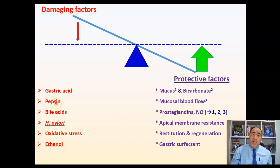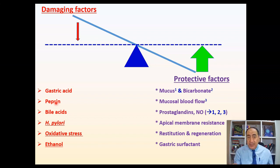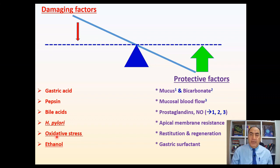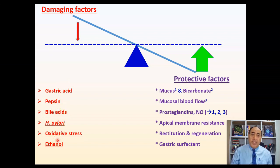Since HCL is inhibited, pepsin — which is produced as pepsinogen from chief cells and converted into active pepsin by HCL — is also inactive. These two damaging factors are not present. For bile acids, nothing needs to be done. If the patient has H. pylori, treat it — we'll discuss that in the next video. For oxidative stress, use antioxidants like vitamin E. Ethanol and smoking also damage mucosal barriers and enhance ulcer development, so ask the patient to stop smoking and drinking alcohol.